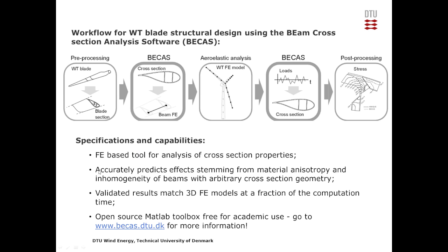The specifications and capabilities: we have a finite element-based tool for analysis of cross-section properties. The idea when we developed this is to improve the accuracy of the BIM model, especially for blades with complicated geometries and many types of materials. BIKAS is able to account for the effects of material anisotropy and inhomogeneity. We have extensively validated the results from BIKAS to match 3D FE models, while using only a fraction of the computation time because of the efficiency of the BIM models.